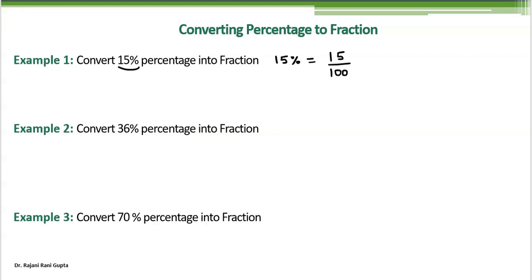It means that if there is something common in numerator and denominator, we should cancel that. So 15 and 100, we can see that 5 is a common factor. So 15, we can write 5 times 3. Similarly, 100, we can write 5 times 20.